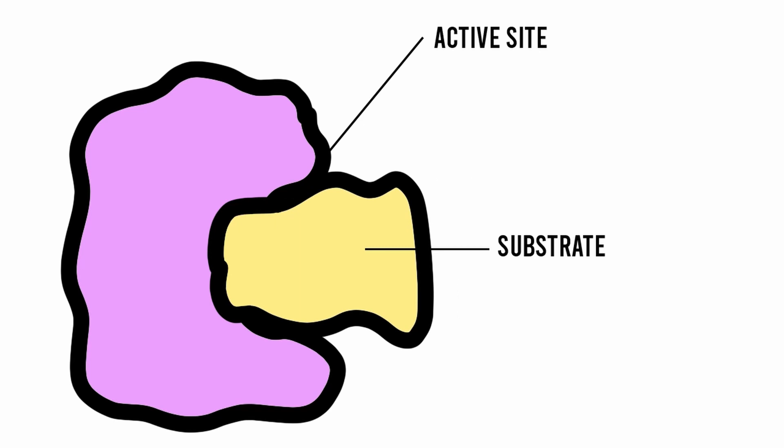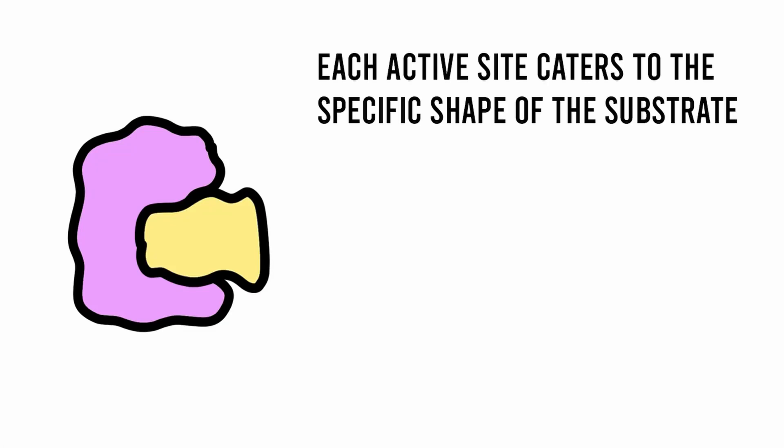Enzymes have specific areas on them called active sites, which bind to what we refer to as the substrate, forming what we call the enzyme-substrate complex. Each active site caters to the specific shape of the substrate.